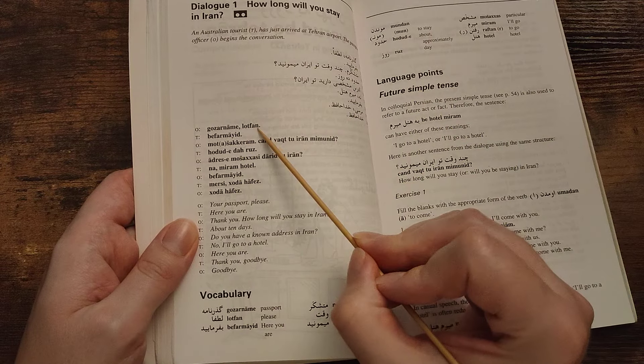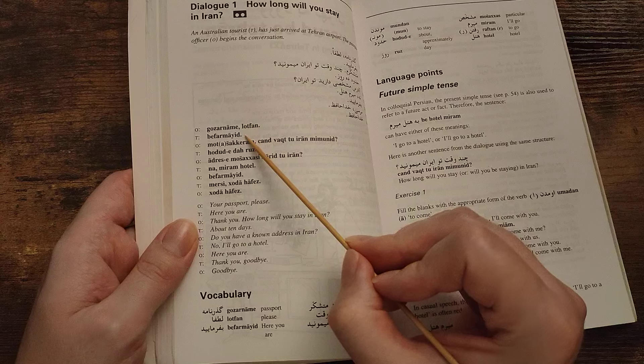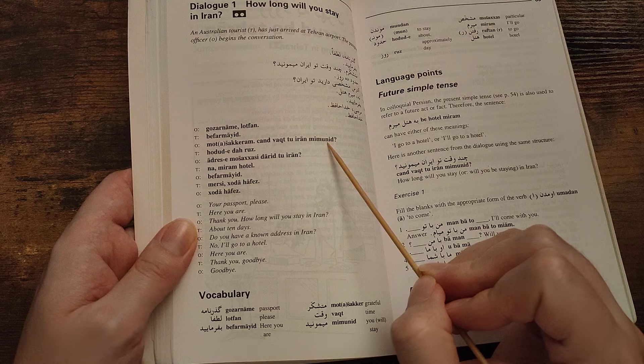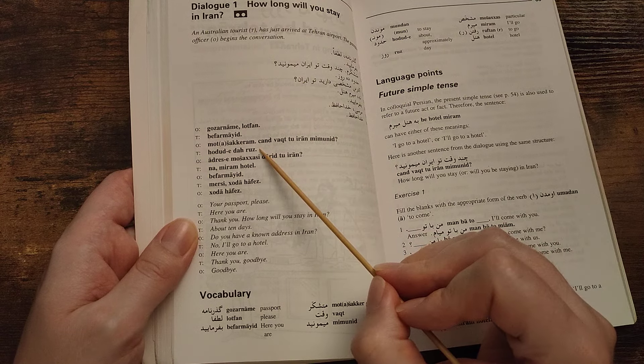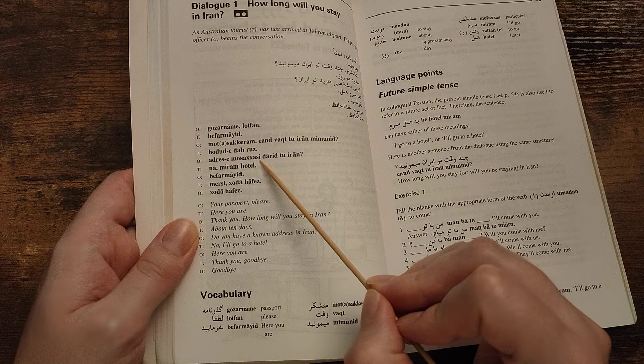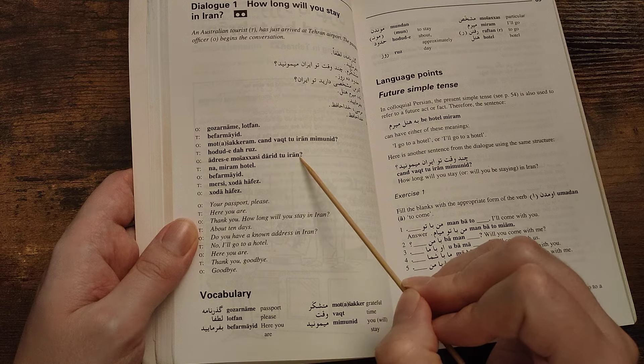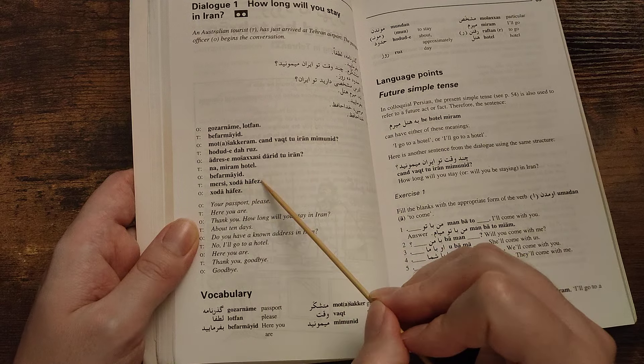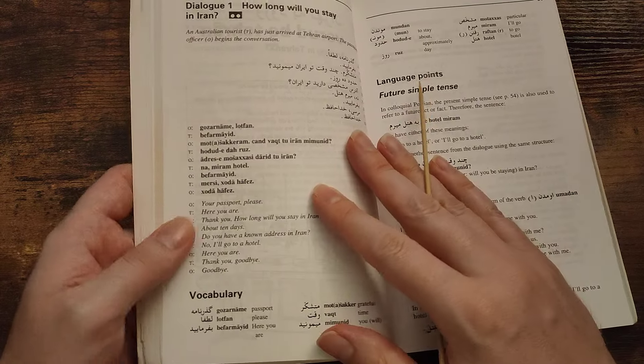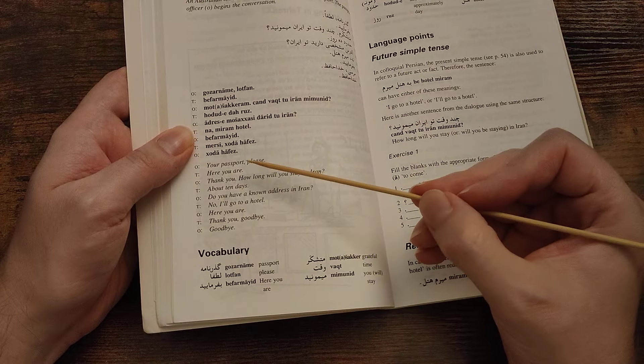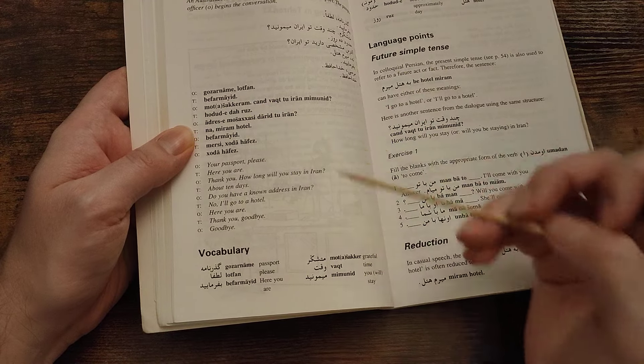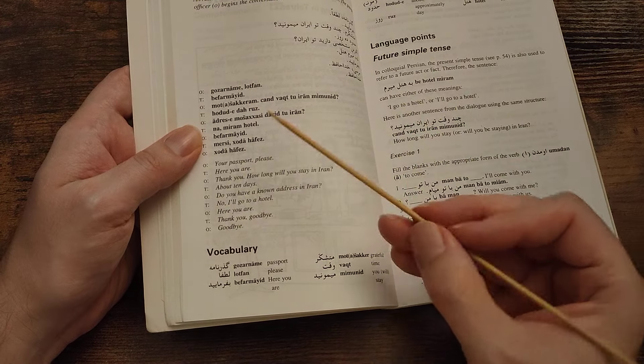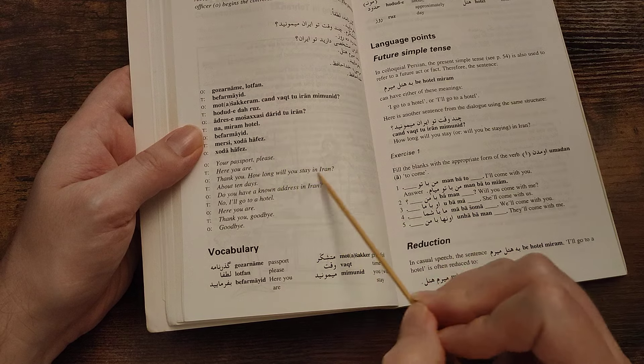Gozarnameh-tun, befarmayid. As adres-e moshakhassi darid to Iran? Na, miram hotel. Befarmayid. Mersi. Khodahafez. So, your passport please. Here you are. Thank you. How long will you stay in Iran?